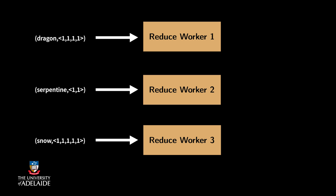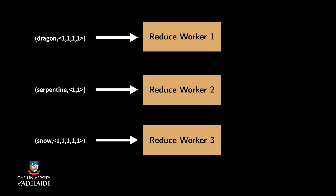Note that all values for a key are given to exactly one reduce worker. The reduce worker then computes the summation of all given values and produces a new key-value pair. It sets dragon as the key and the summation as the value.